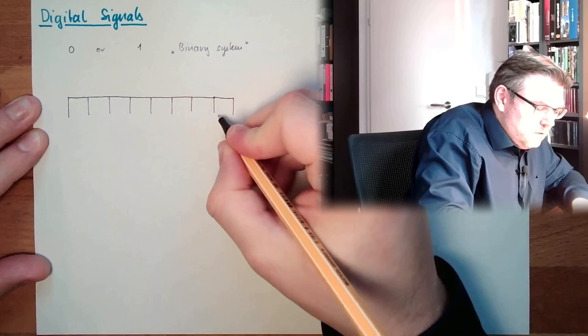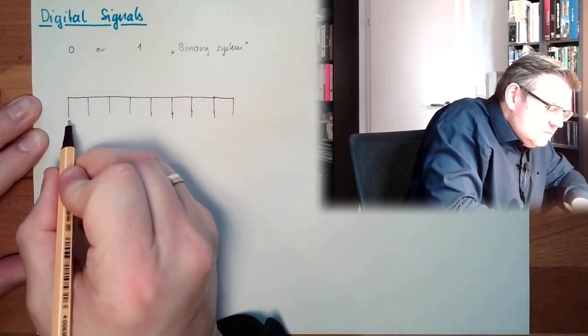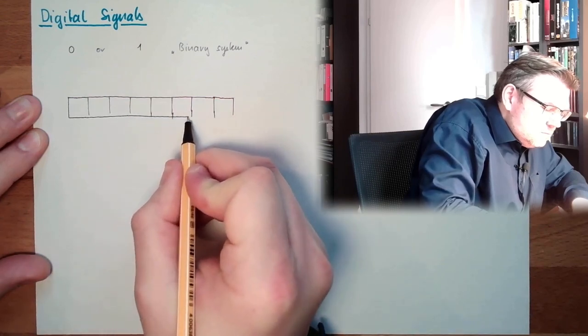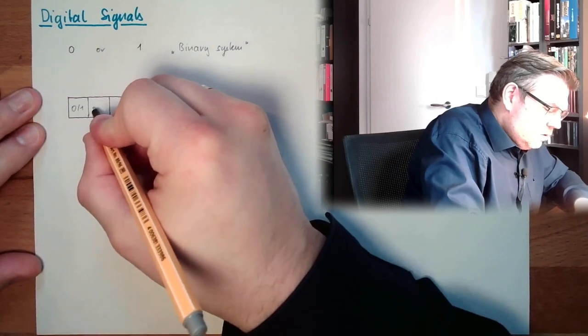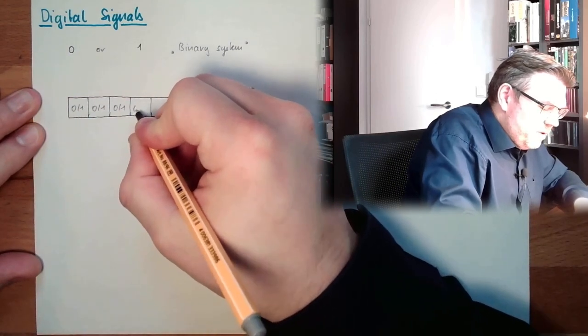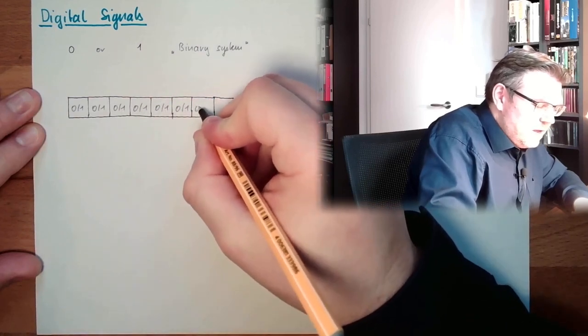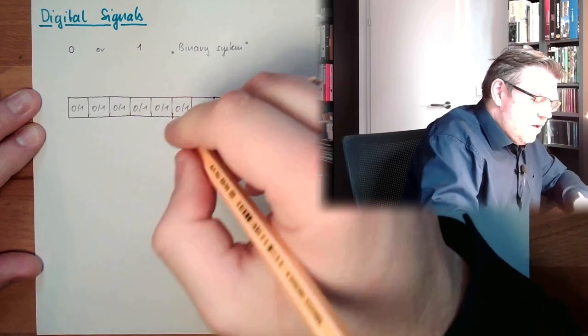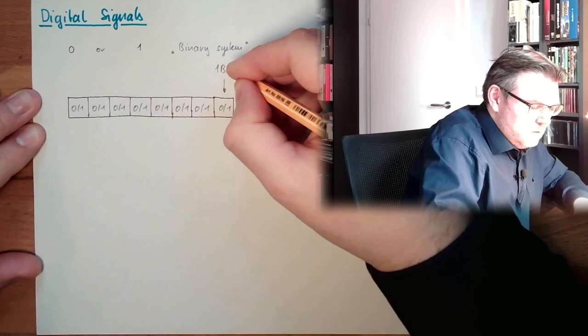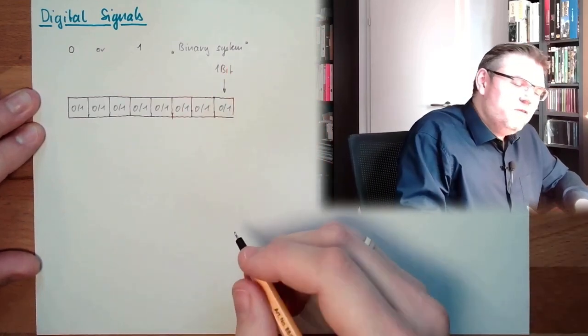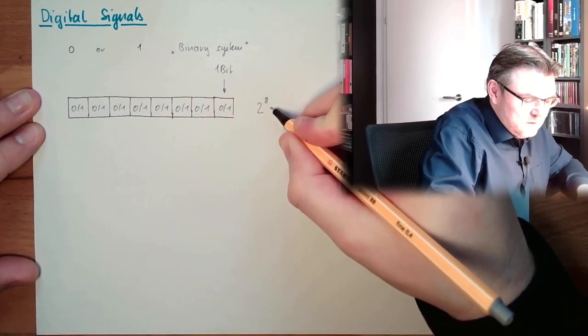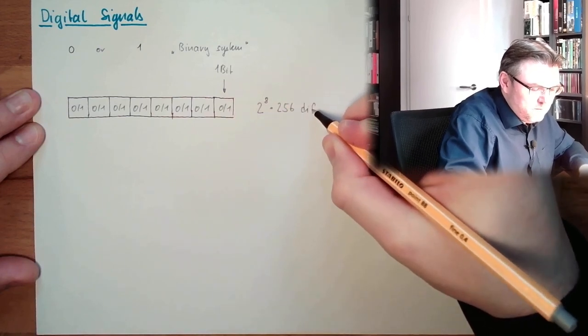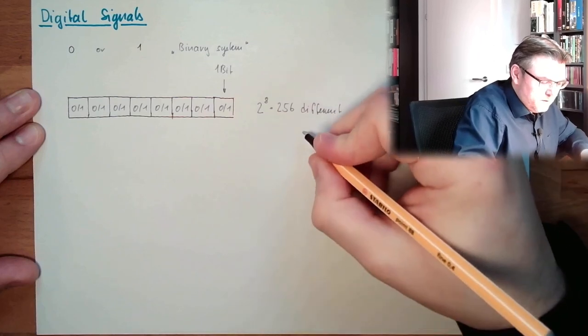Make one more because this is the usual size. So we have eight binary digits, either a zero or one, and the combination of these is one bit. And the combination of these now gives us two raised by the power of eight, 256 different information bits.